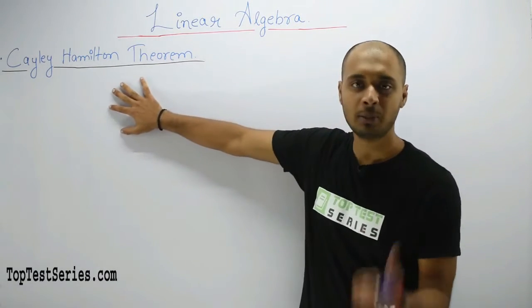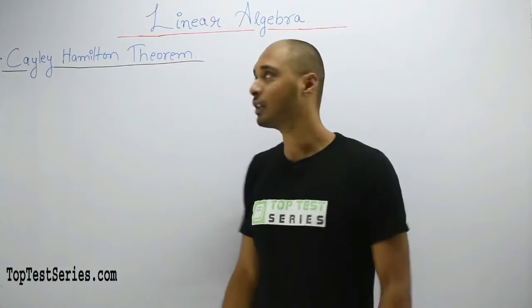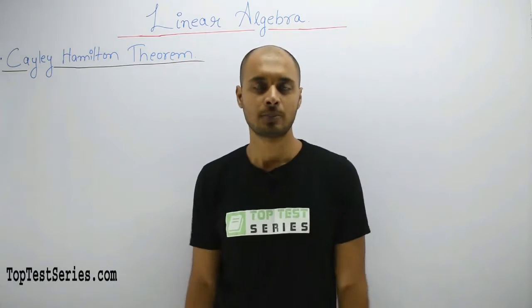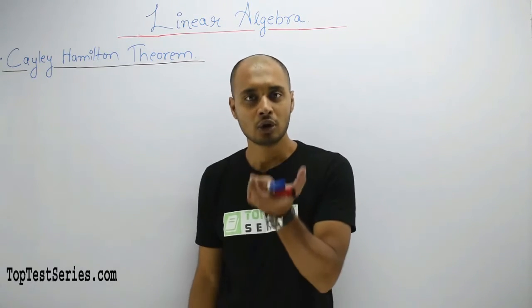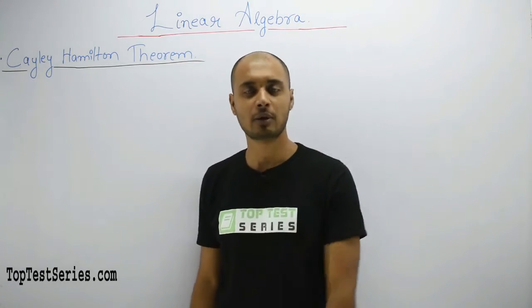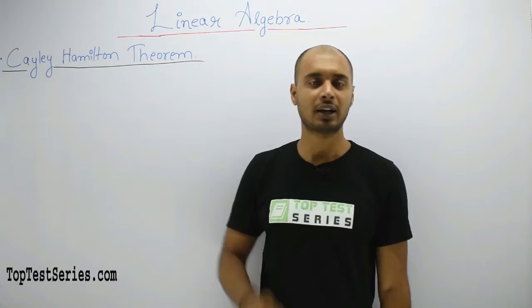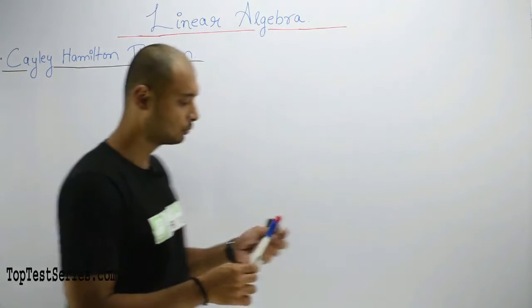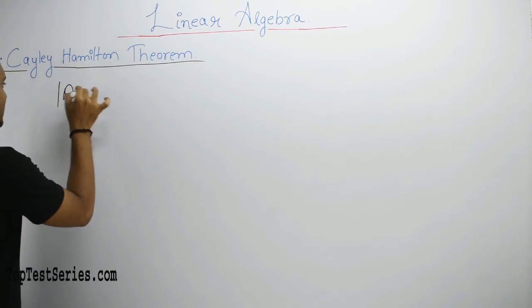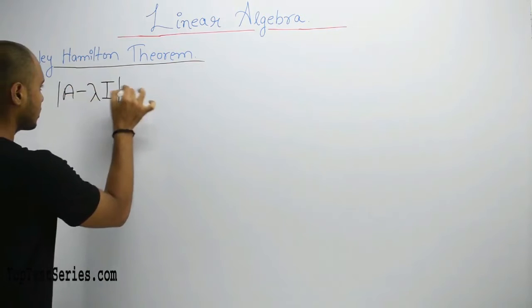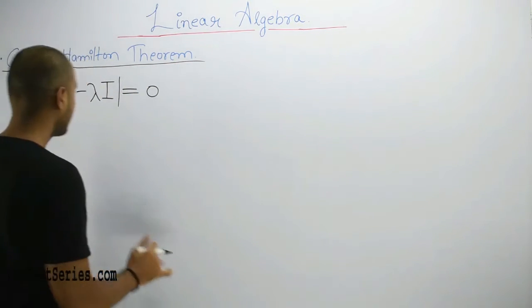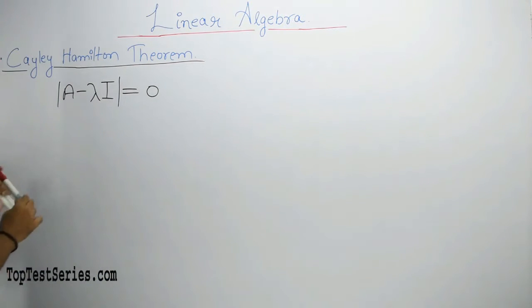Next point is the definition — what does the Cayley Hamilton theorem state? Cayley Hamilton theorem states that every square matrix satisfies its own characteristic equation. The characteristic equation is a polynomial in terms of eigenvalues, in terms of lambda. Whatever characteristic equation comes out, the square matrix will satisfy it. Let me take an example.